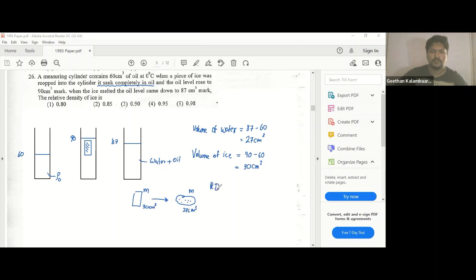Relative density of ice, how do you get it? Density of ice divided by density of water. How do you get density of ice? Mass of ice divided by volume of ice, divided by mass of water divided by volume of water. So what do you get? 0.9, it's that easy.